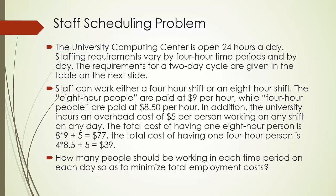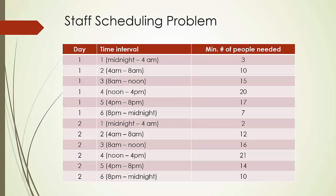The total cost of having one 8-hour person is 8 times 9 plus 5, which is equal to $77. The total cost of having one 4-hour person is 4 times 8.5 plus 5, which is $39. How many people should be working in each time period on each day so as to minimize the total employment costs?